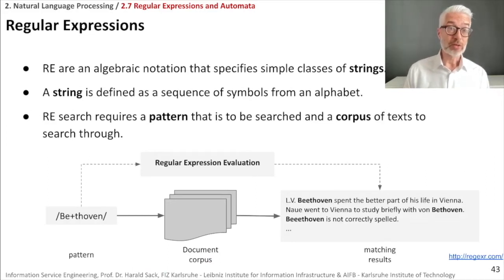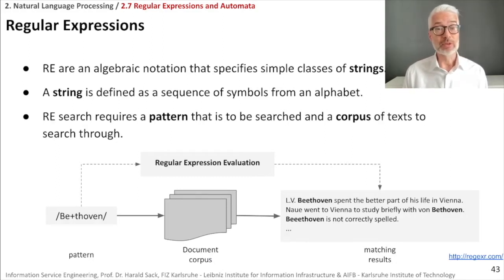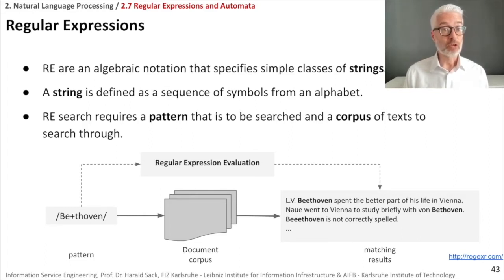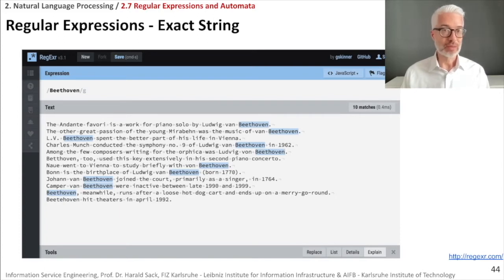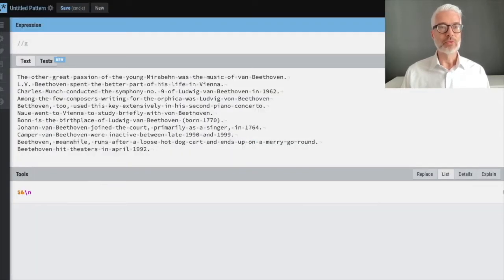Regular expressions are an algebraic notation that specifies simple classes of strings. A string is a sequence of symbols from an alphabet, and a regular expression search requires a pattern to be defined so you can search a corpus of texts. We have prepared examples using the Beethoven corpus and an online tool called the Regexer, which we can use to try things out live.